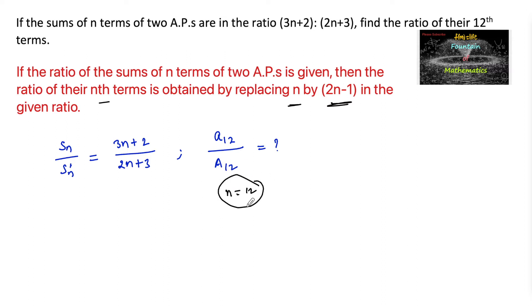We can use and we have to replace here in place of n, we have to write 2 times 12 minus 1. That is, replace n by 2 times 12, that is 24 minus 1, which equals 23.